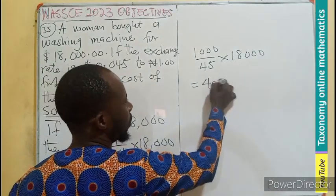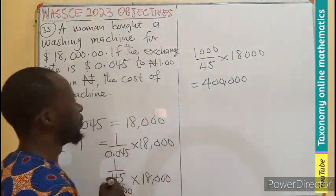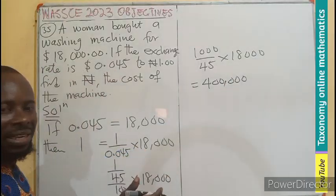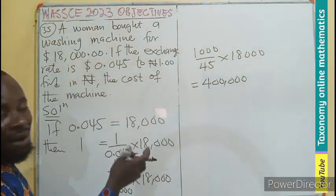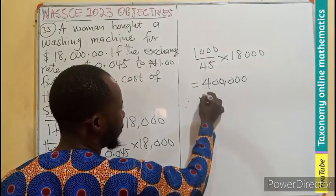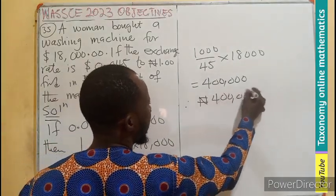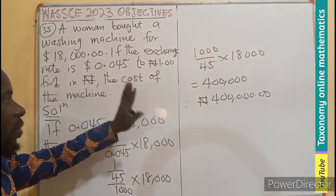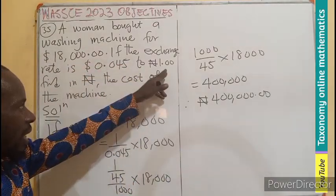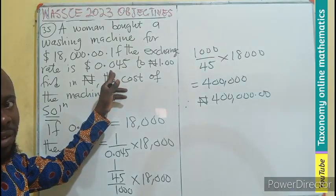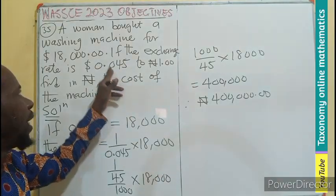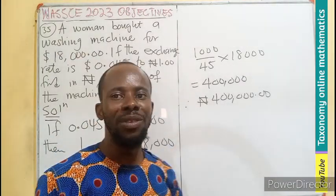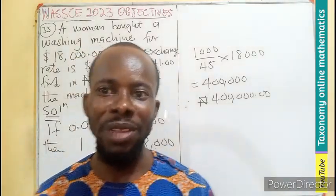And that will give us 400,000. Therefore, we have 400,000 Naira. So if you are having an exchange rate of 1 Naira = 0.045 dollars, if you are paying 18,000 dollars, if you convert it, it becomes 400,000 Naira. Thank you so much for watching.